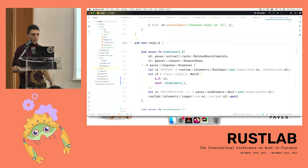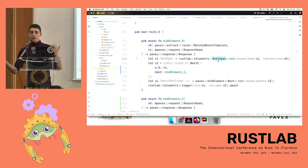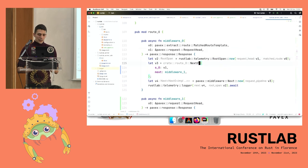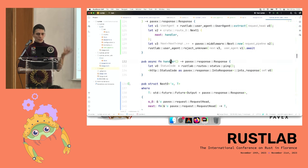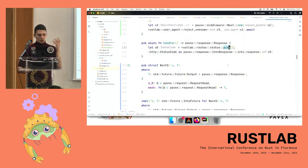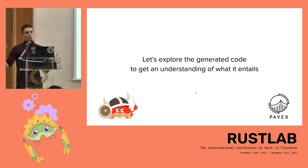Below you find all the actual code — the router and route-level invocations. For the ping route, we register three middlewares: logger, reject anonymous, and the actual handler. The logger requires a root span, which is built there. The root span requires the request head and the matched route as inputs. Then we need to pass state down the middleware chain. Middleware two is `reject_unknown`, which requires the `UserAgent`, so here is the user agent extraction. Last, you go all the way down to the handler. There's some boxing code to handle async traits that will go away in December when we get async traits stabilized.